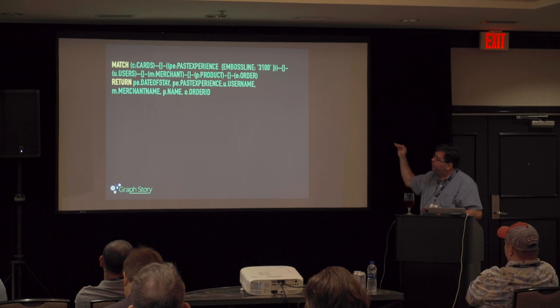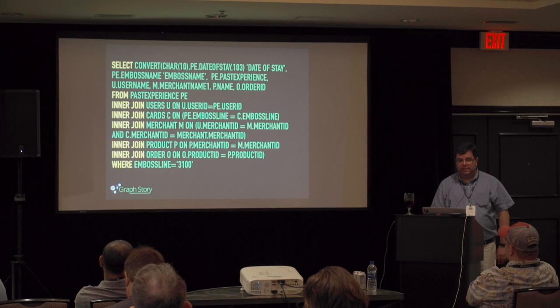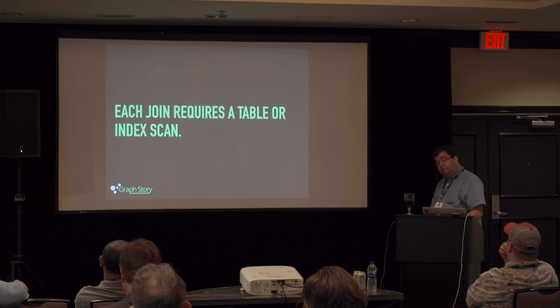This is the corresponding query in Cypher — the Neo4j query language, which is also becoming a standard. Neo4j has opened it so other graph companies can use it; it will probably become the SQL for graphs. Cards to past experience — anything in parentheses are nodes, anything in square brackets are relationships. You notice there are no relationship names — sometimes you don't care about them, you just want to know they're connected. That dash-bracket-dash is how they're related. Those are your joins. Match this pattern, then return this data.